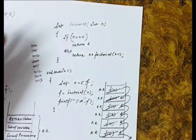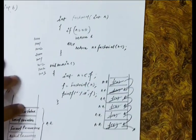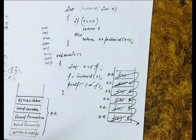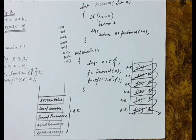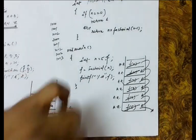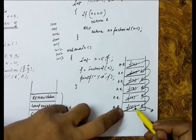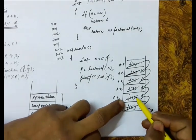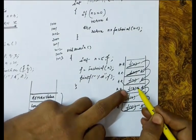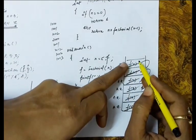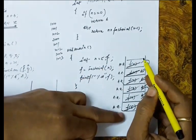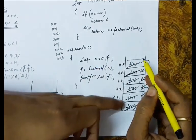This is the actual program of the factorial. We have seen that on every function call, we are storing the activation record in the stack region. Suppose we have to find out the factorial of 5. In the activation record, first we store the activation record of factorial(5), then above this factorial(4), above this factorial(3), above this factorial(2), above this factorial(1), and above this factorial(0). At any point of time, all these are pending.